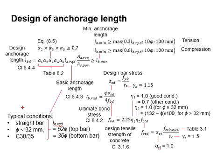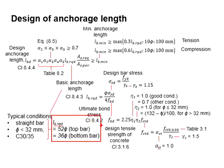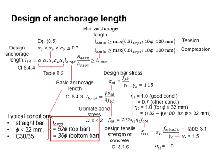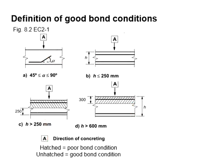Under normal circumstances, when the bar diameter is less than 32 mm for a straight bar and the concrete strength is C30, the basic anchorage length will be equal to 52 bar diameters and 36 bar diameters for the top and bottom bar respectively. The difference is mainly due to the bond conditions, whether good or poor. Eurocode 2 provides a definition of good and poor bond conditions.